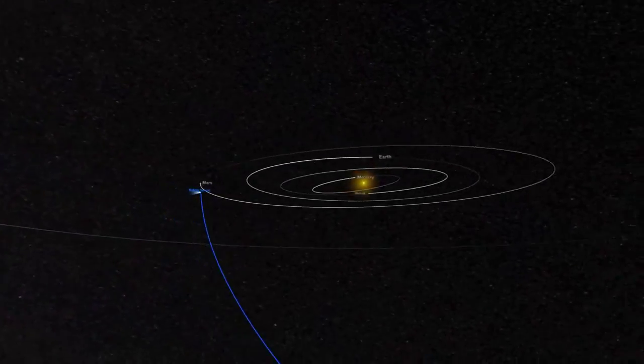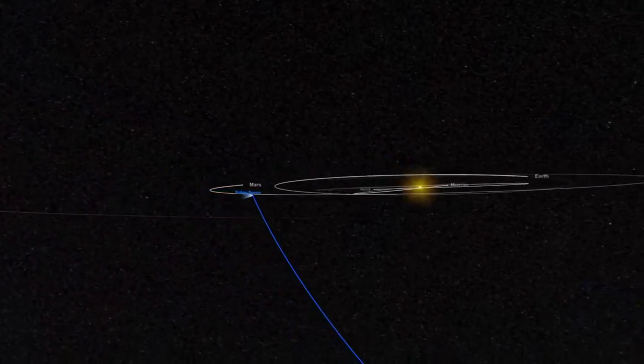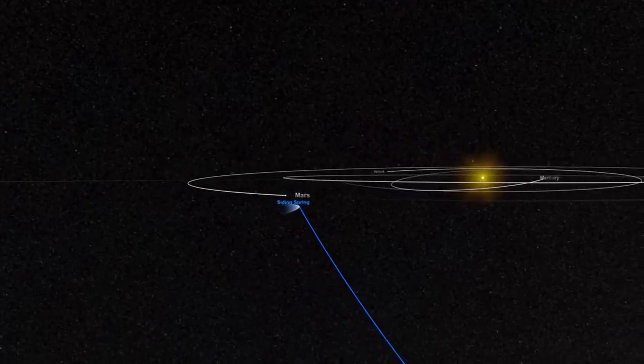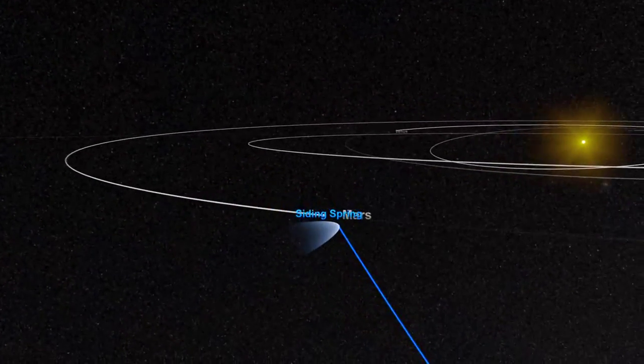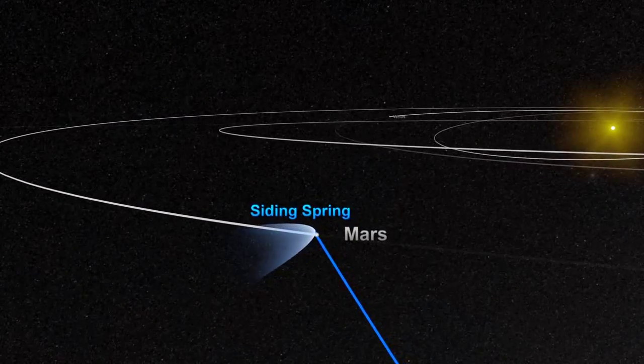It was discovered by astronomers at Australia's Siding Spring Observatory in 2013 and is now approaching the plane of the solar system, set to make a remarkably close encounter with Mars.